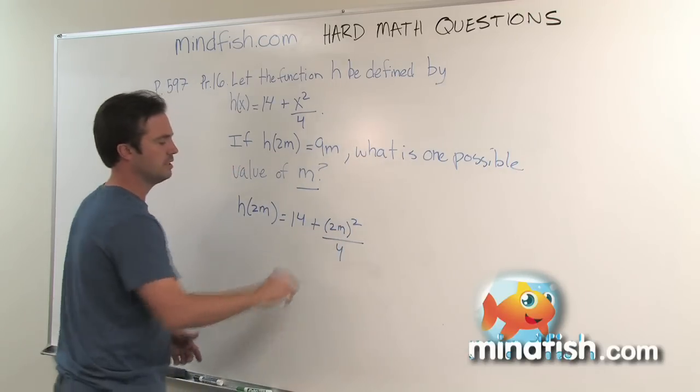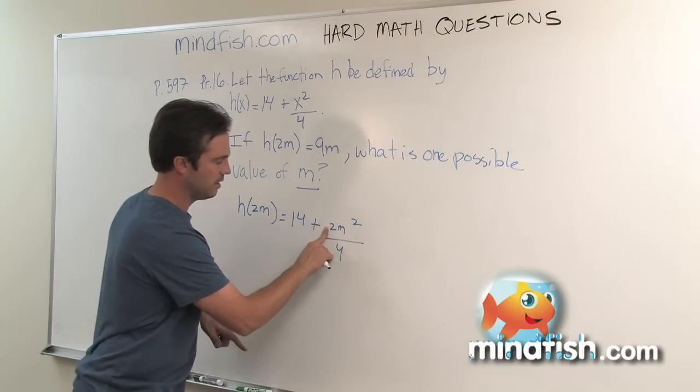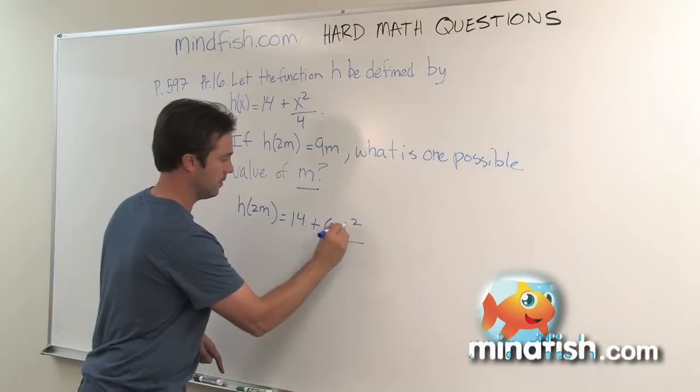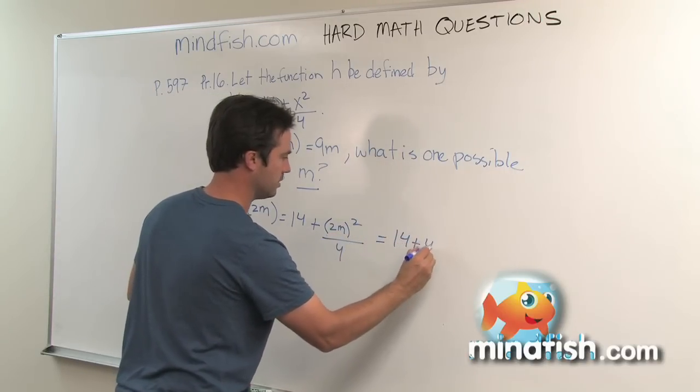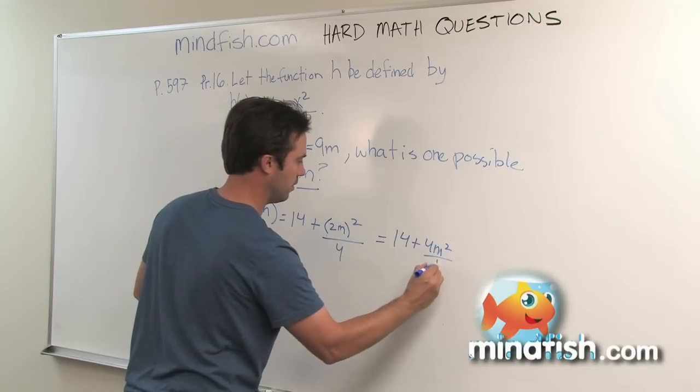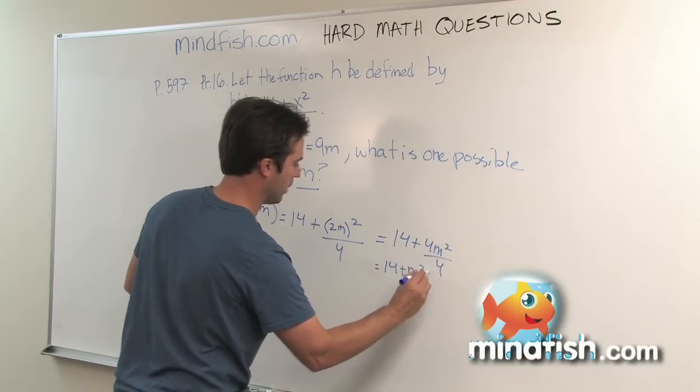Now, it's really important that you put it inside those parentheses, because if you don't, most people would forget to square the 2, and that would cause a mistake. So we're going to simplify that out, and that's going to be 14 plus 4m squared over 4, which is going to be 14 plus m squared.